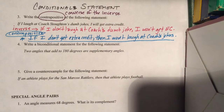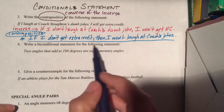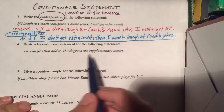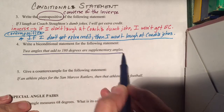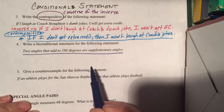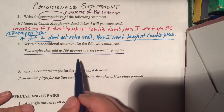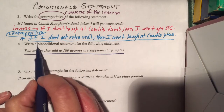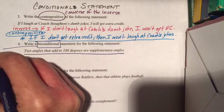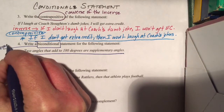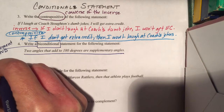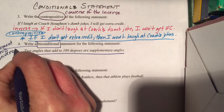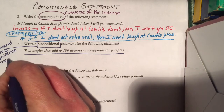Now we have a biconditional statement. The task is to write a biconditional statement for: two angles that add to 180 degrees are supplementary. The only way we can write a biconditional statement is if the statement and its converse are both true.